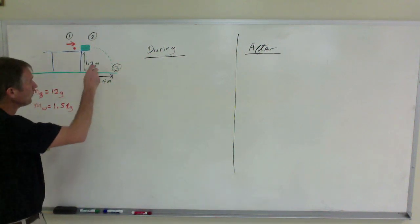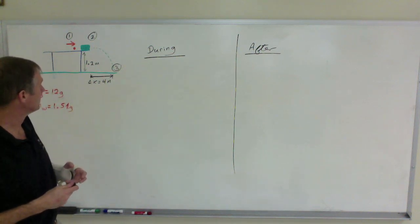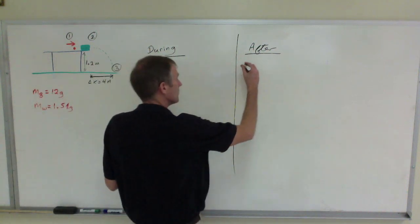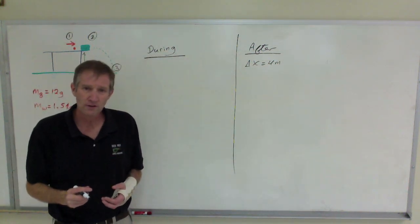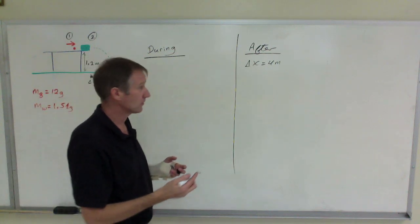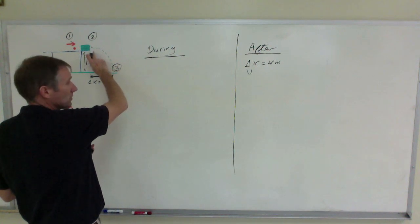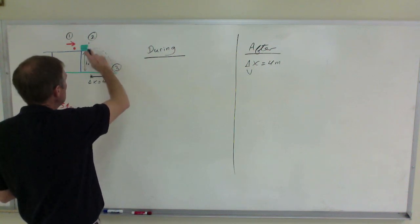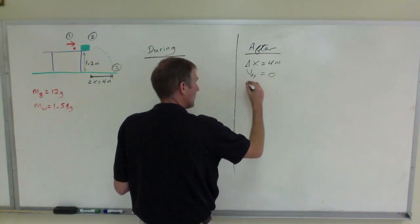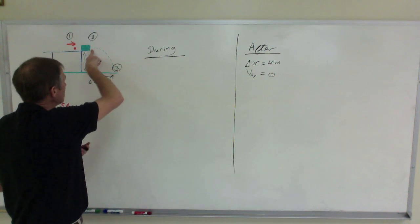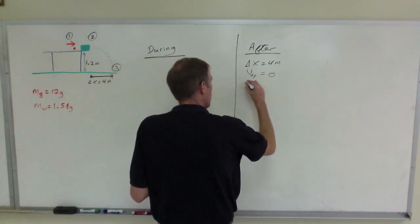To do that, we start by looking at the information given after the collision. After the collision, the range of the projectile — which has the bullet embedded in the block — is 4 meters. So delta x equals 4 meters. It goes off the table horizontally, therefore the initial vertical velocity v2y is 0. What I want to find is the velocity in the x-axis at point 2, v2x, just as it goes into the air after the collision.